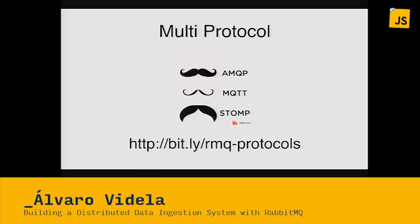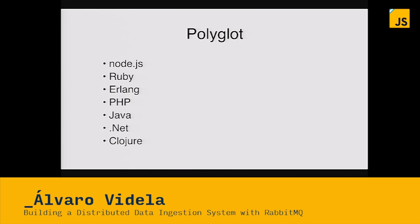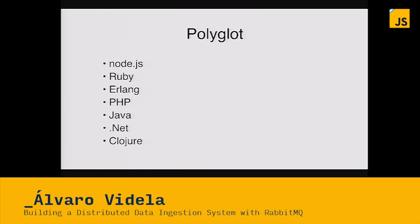Stomp is a text-based protocol used at the New York Times for WebSockets. In JavaScript, if you want to do browser messaging, Stomp is the best protocol for that. It's also used at CERN in Switzerland. Rabbit is a polyglot system, so you can connect from Node, Ruby, Erlang, PHP, Java, .NET, Clojure, Haskell, and many more. Most of these clients are maintained by the RabbitMQ team, so they're all well-maintained libraries. I'm responsible for the PHP library, for example.